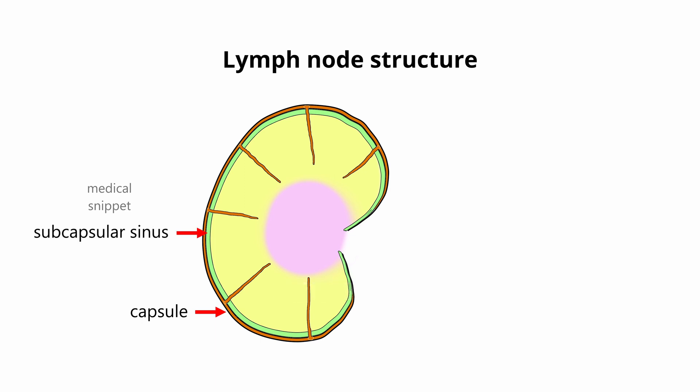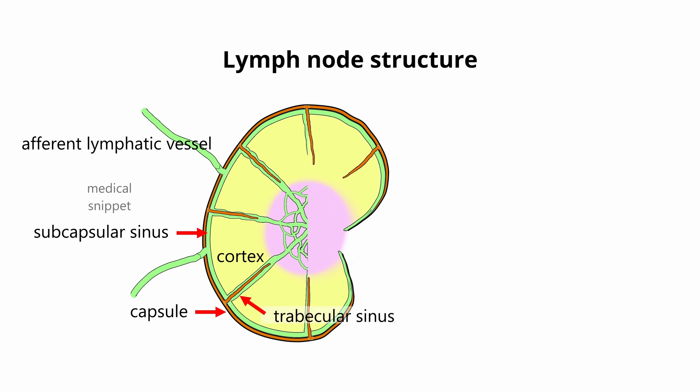Subcapsular sinus is the space between the capsule and the cortex. Afferent lymphatic vessels drain into the subcapsular sinus. Lymph that is received in the subcapsular sinus flows along the trabecular sinuses and finally drains into medullary sinuses in the medulla of the lymph node.